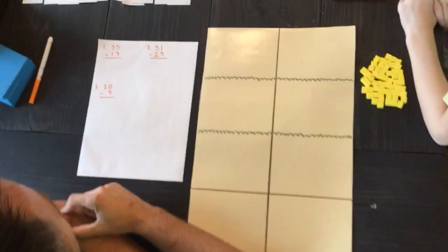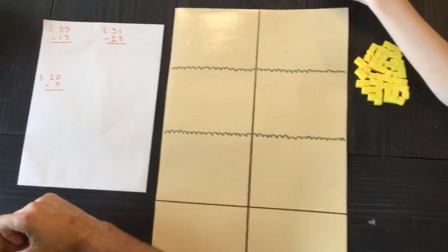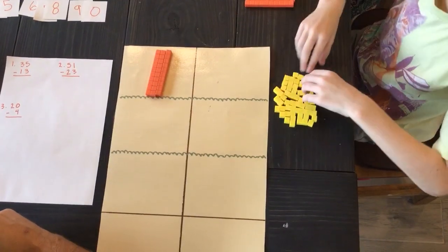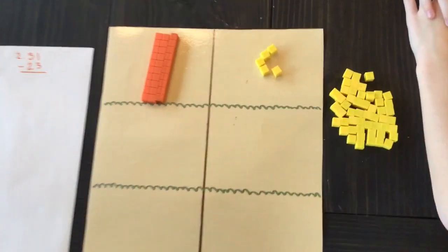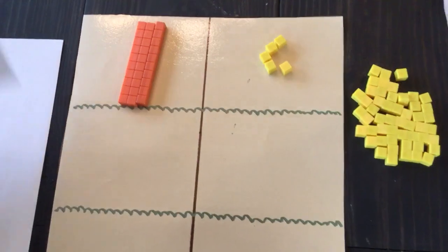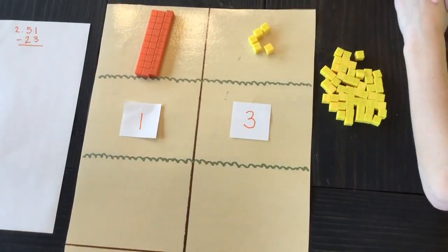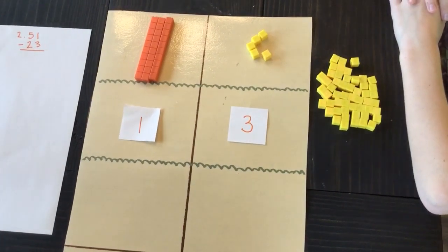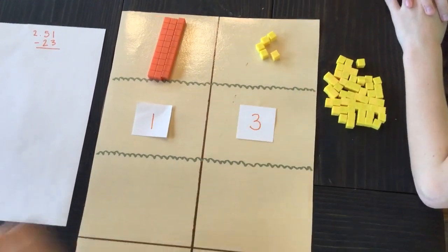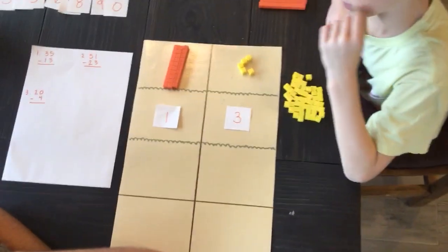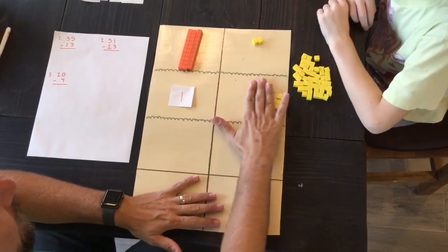So let's subtract 35 minus 13. What I want you to do first is just build 35 for me. Awesome. So we've got 35, and we're going to subtract the number 13. When we subtract, we want to look at our ones place first. Can I subtract three from what I have up here, from my five? Yes, you can. I can. Can you bring three down there? All right. So we can subtract those. We can get rid of those.